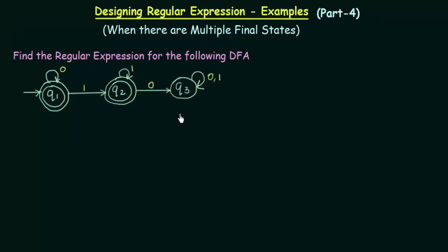The process is very simple. We have to find the regular expressions for all the final states that we have, and at the end we just do the union of them. Let us proceed as we normally do. First we will find the equations for the states. Here we have states q1, q2, q3, and q1 and q2 are the final states.